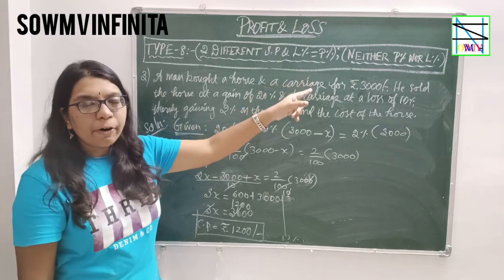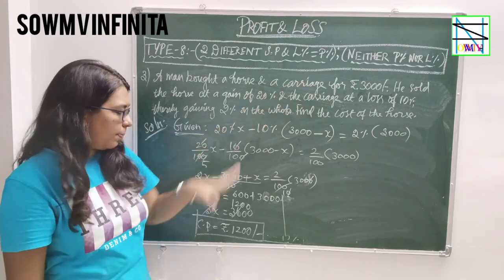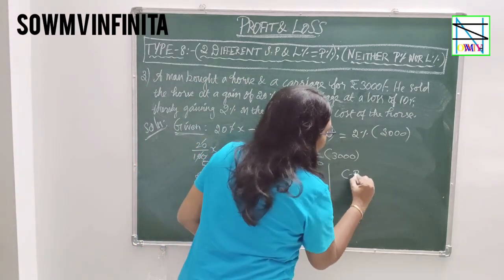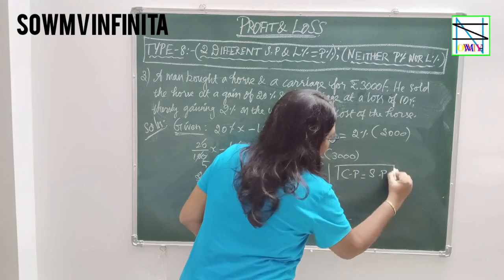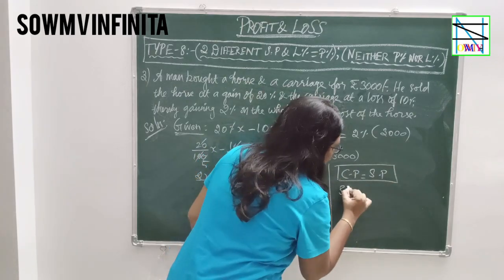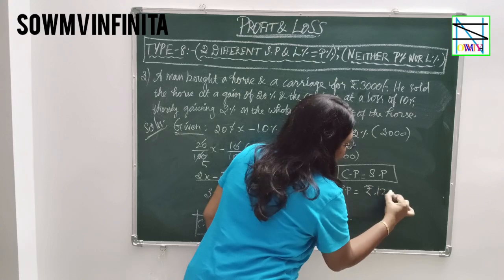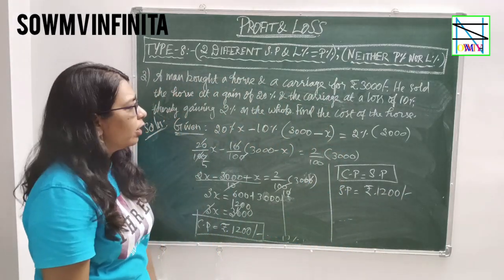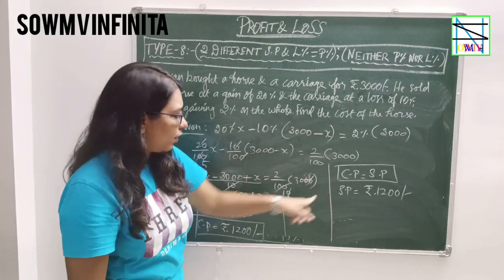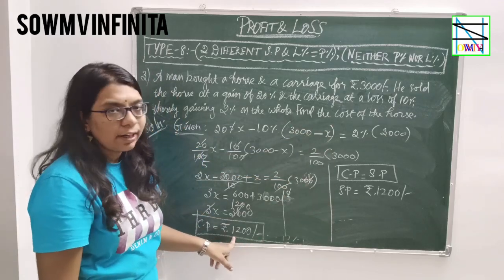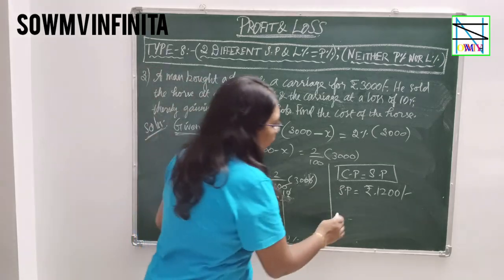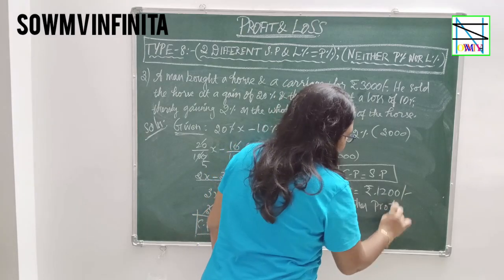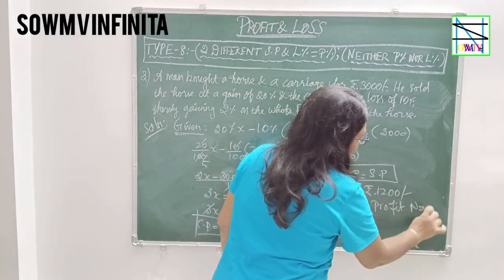This is related to the neither profit nor loss condition. That means CP value equals SP value. Therefore SP is 1,200 rupees. The cost of the horse is 1,200 rupees. This is the answer, related to neither profit nor loss.